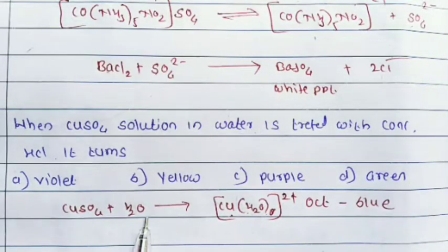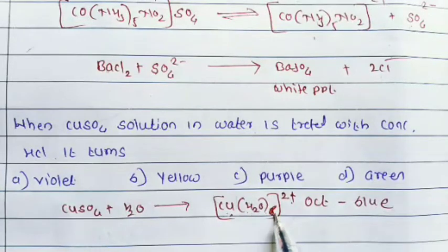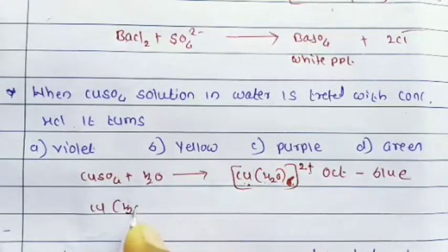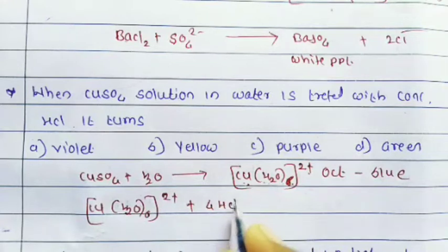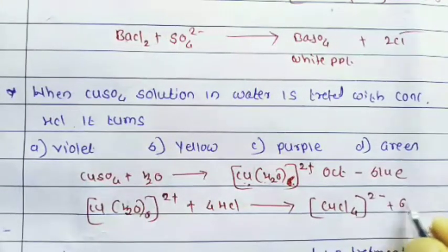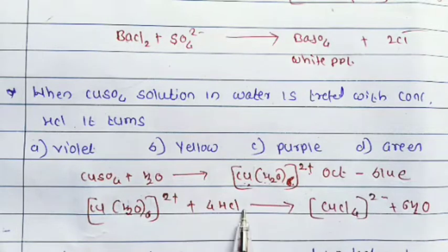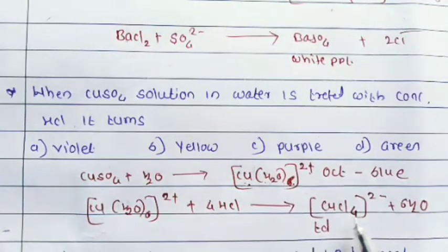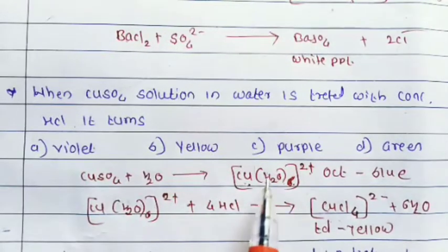When this blue [Cu(H₂O)₆]²⁺ solution is treated with concentrated HCl, four molecules of HCl react with it to form [CuCl₄]²⁻ ions, which is a tetrahedral complex. This tetrahedral complex is yellowish in color.